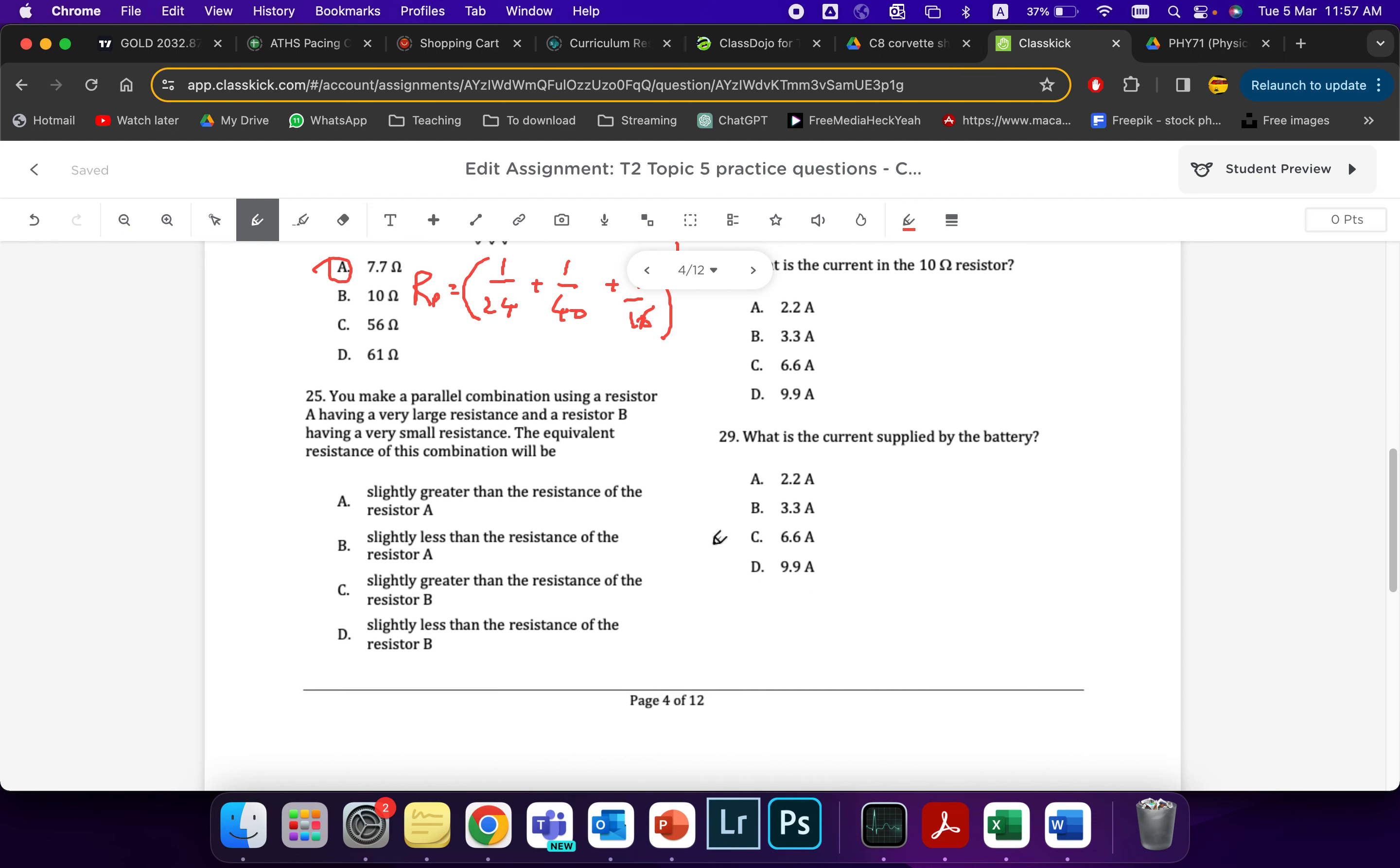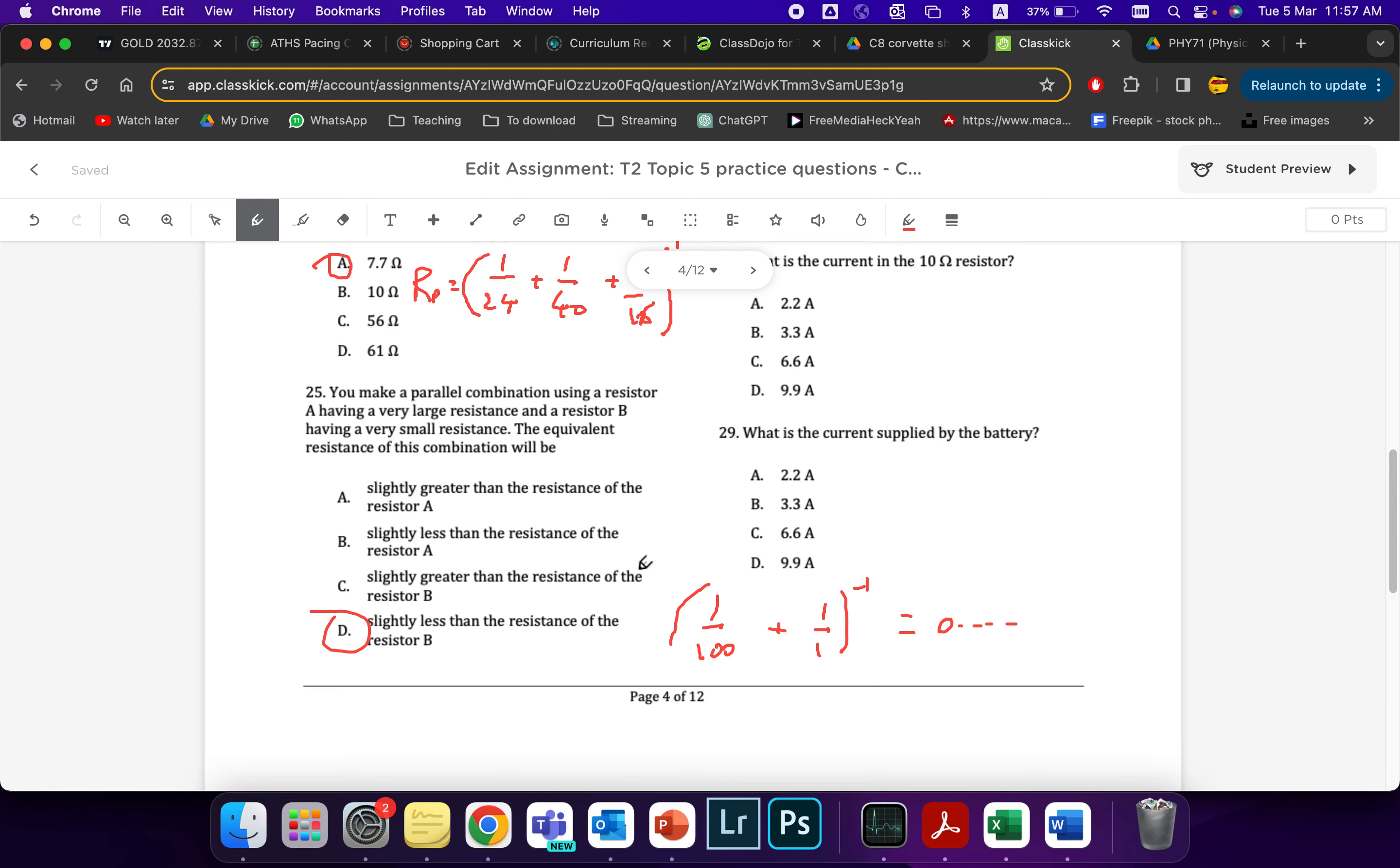Next, you make a parallel combination using a resistor. One is very large and one is very small. And I actually explained this in the other video as well. The equivalent resistance should be smaller than the smallest resistor every time. If I had two resistors, 1 over 100 plus 1 over 1, for example, that's 100 and that's only 1. If I did this, your final answer would be 0 point something. You'll get a small number, smaller than the smallest resistor. So B has a small resistance. It should be slightly smaller than B, slightly less than B. And the answer here is D.